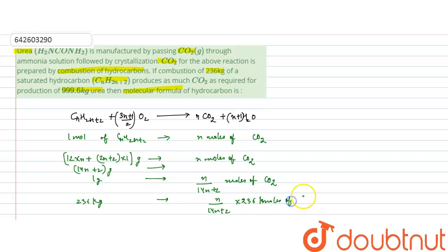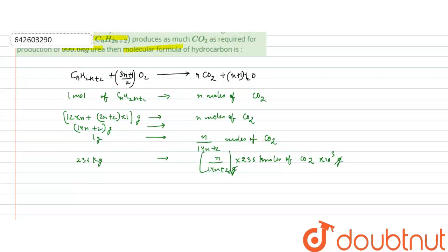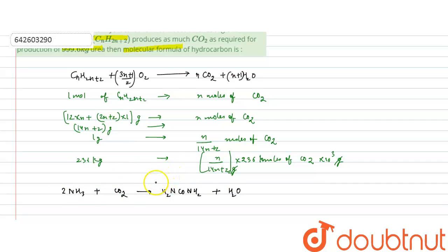Converting units (kg to grams, multiplying by 10³), 236 kg of hydrocarbon produces n/(14n+2) × 236×10³ moles of CO₂. The CO₂ then reacts with ammonia solution to produce urea: 2NH₃ + CO₂ → NH₂CONH₂ + H₂O. From this balanced equation, 1 mole of CO₂ produces 1 mole of urea.